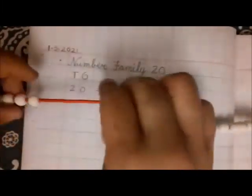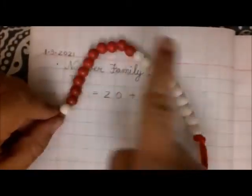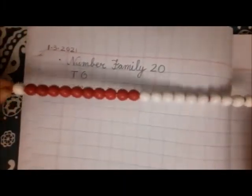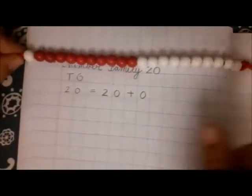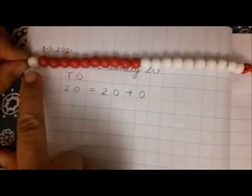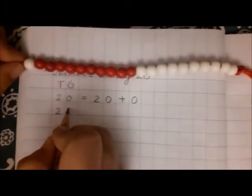Now one more has come. This is number 21. When you have two tens and one extra, this is number 21.